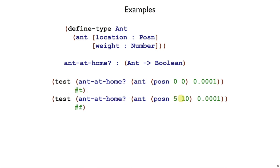In this other example, it's an ant of the same weight. The weight turns out not to factor into this problem — it's just a question of whether the posin is the origin, and in this case we've made one that's not, so false. I only had one variant to drive my examples, the ant variant, but I had two different kinds of results. So it's a good idea to have examples that cover the space of results, particularly when you have booleans with only two kinds of results.